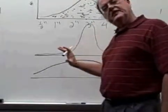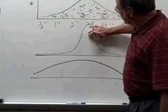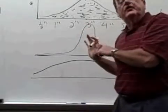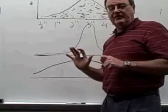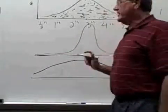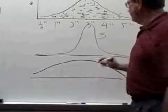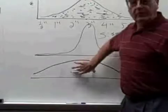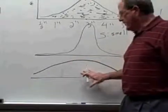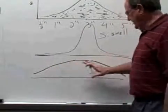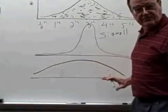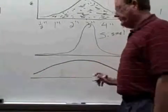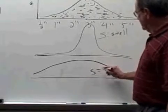Now, what does the standard deviation have to do with these pictures? In the distribution where most of the blades are pretty close to three inches, that means they don't vary much. A data set that doesn't vary much has a small standard deviation — a small s value. For a data set with a lot of wide variation, this results in a larger standard deviation value, so my s value would be larger.